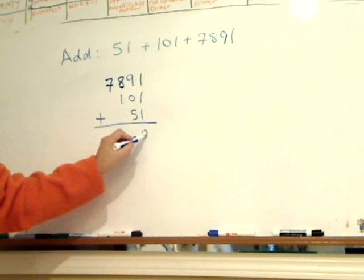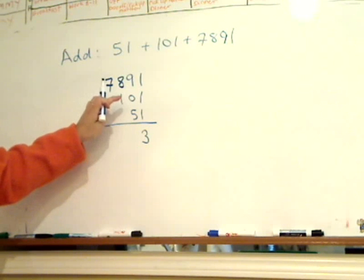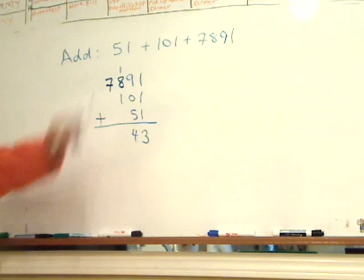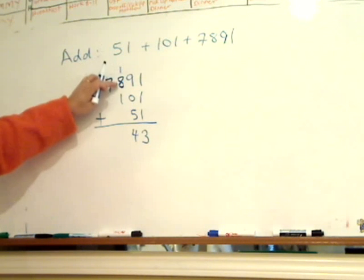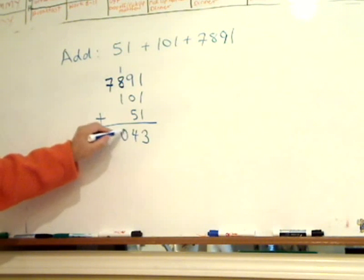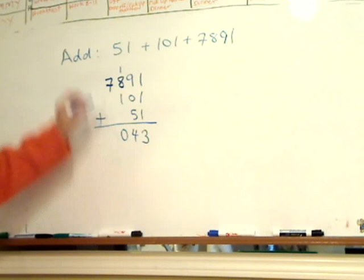So 1 plus 1 plus 1 is 3, 9 plus 0 is still 9, plus 5 is 14, carry the 1. Remember, now it's carrying over to the next digit. So now it's 1 plus 8 plus 1 is 10.